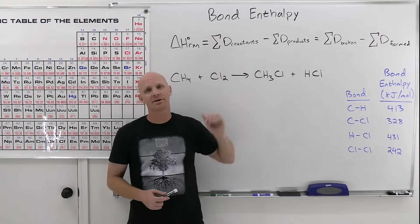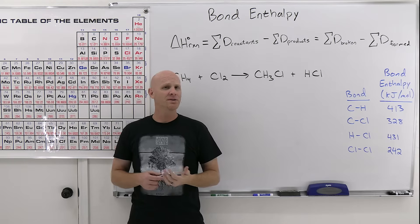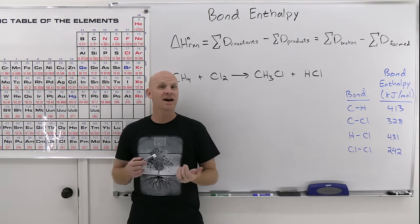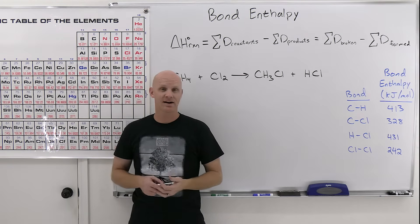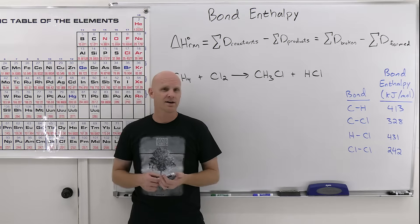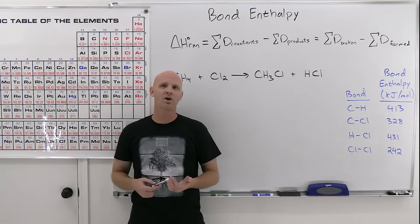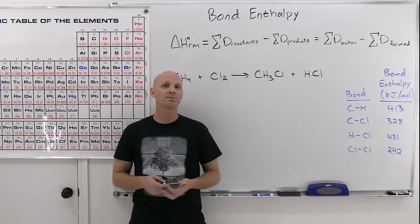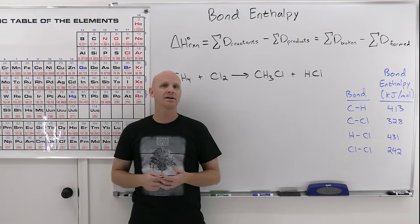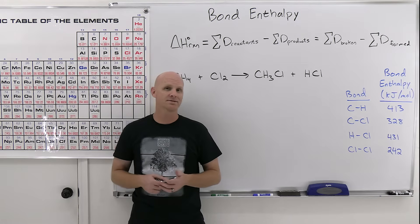Bond enthalpy is the topic of this lesson. Bond enthalpy, also called bond dissociation energy, is simply the energy it takes to break a bond. If we keep track of all the bonds being broken and all the bonds being formed, we can tally it all up and get an approximation for the delta H of a reaction.